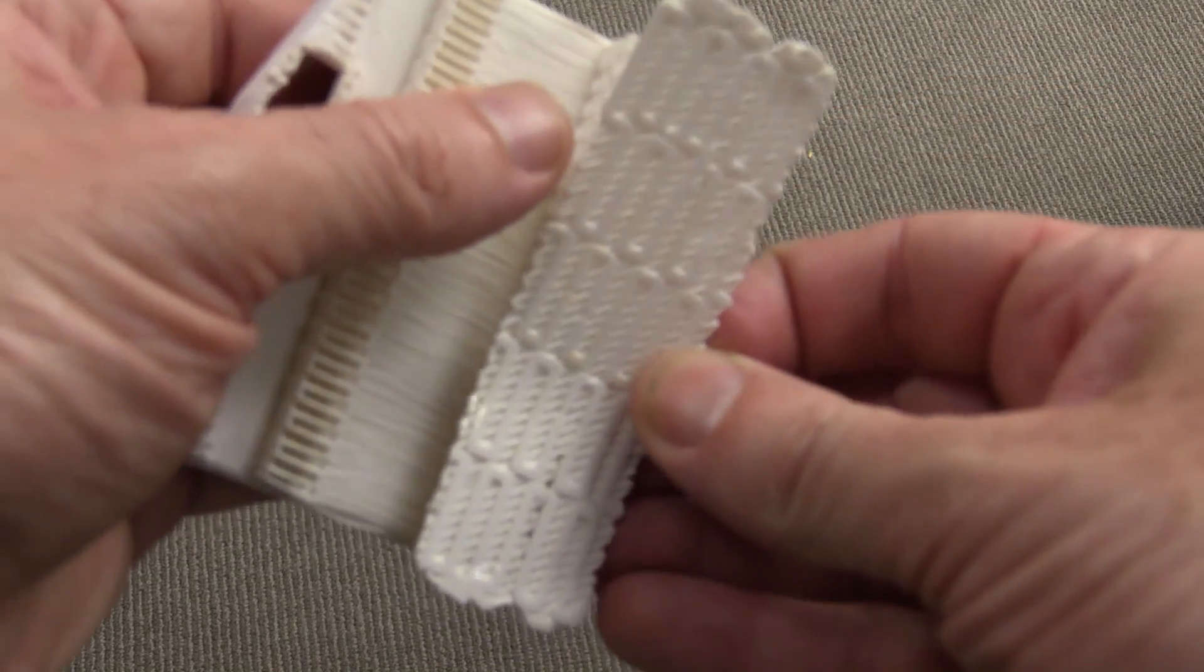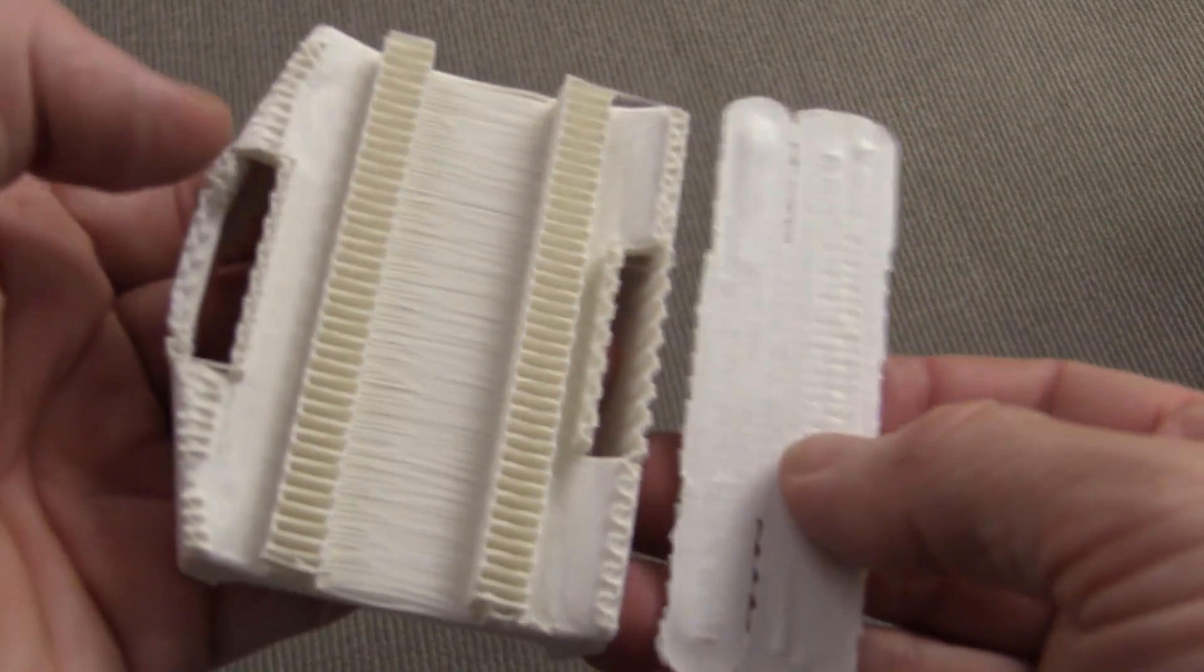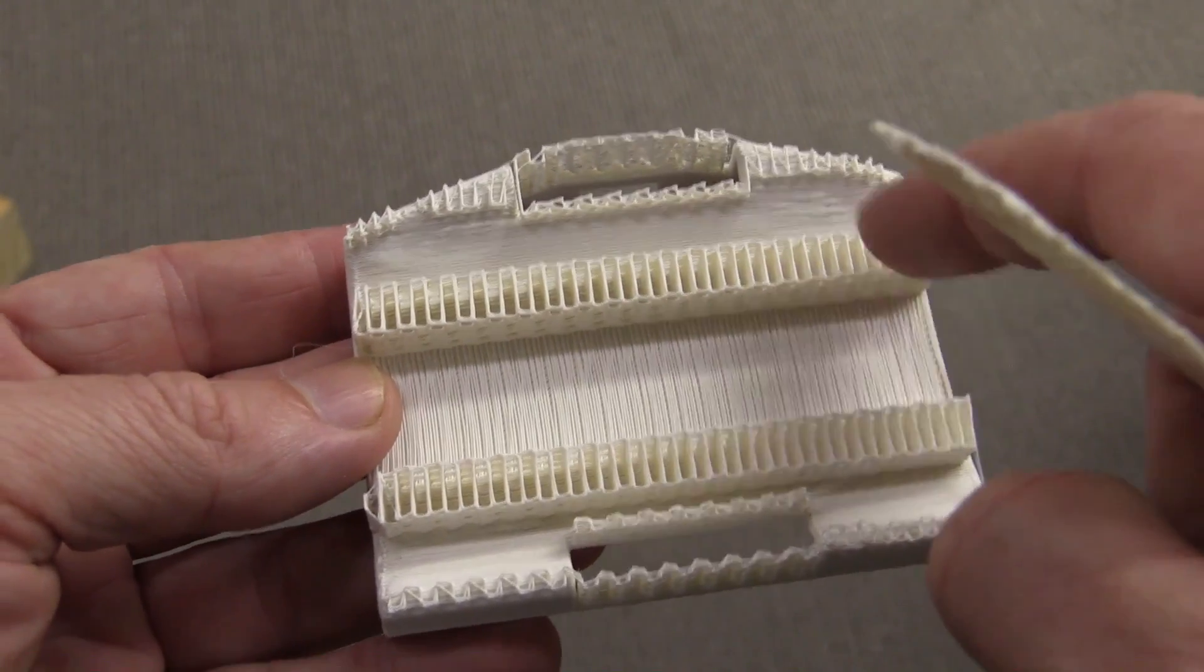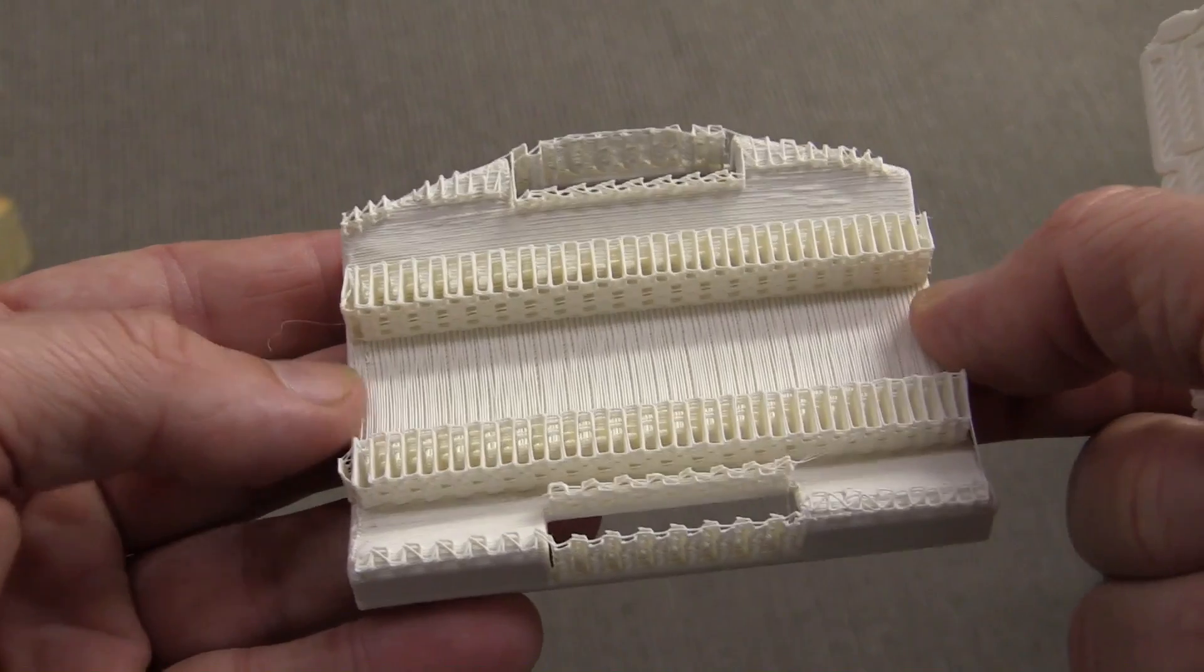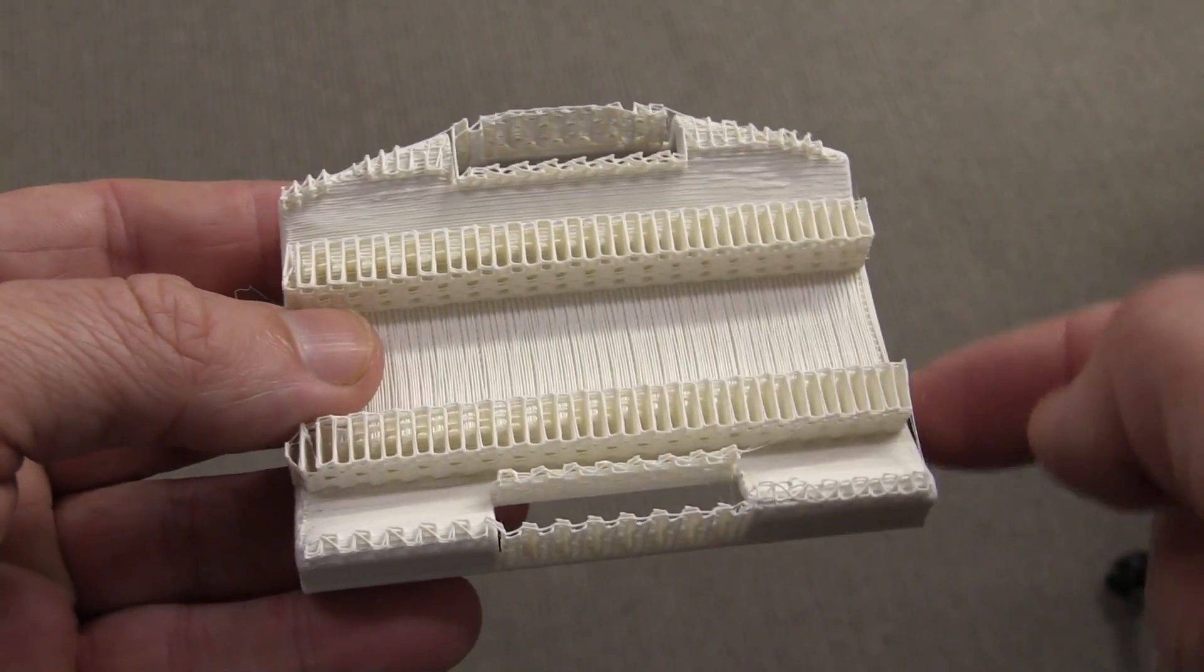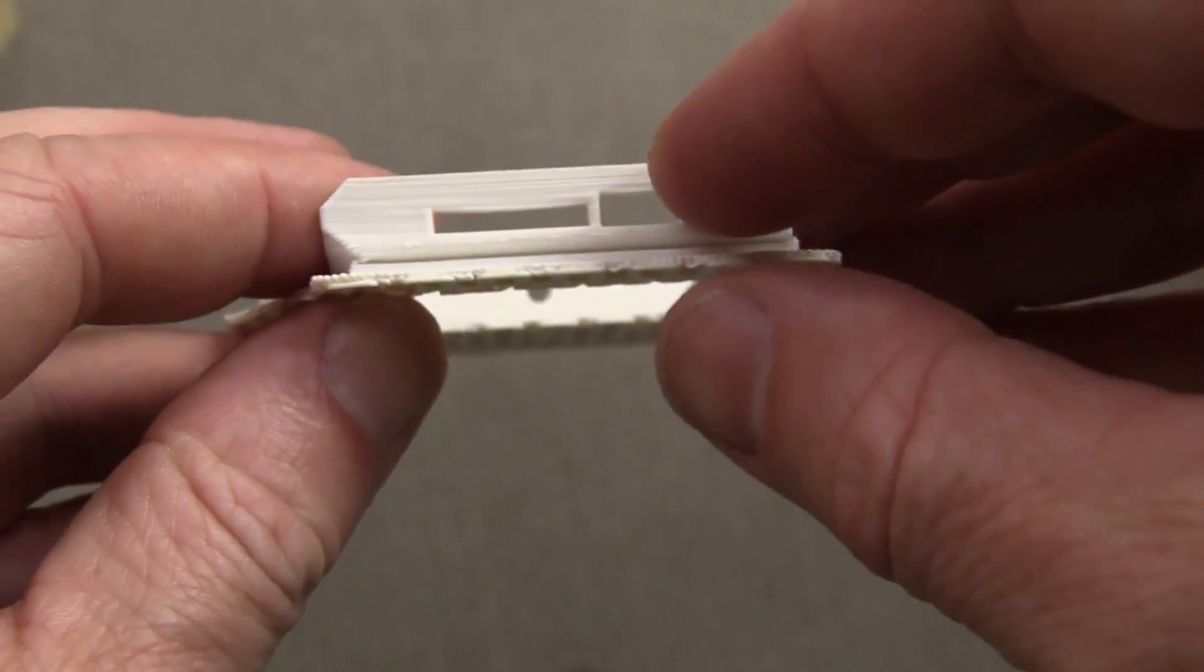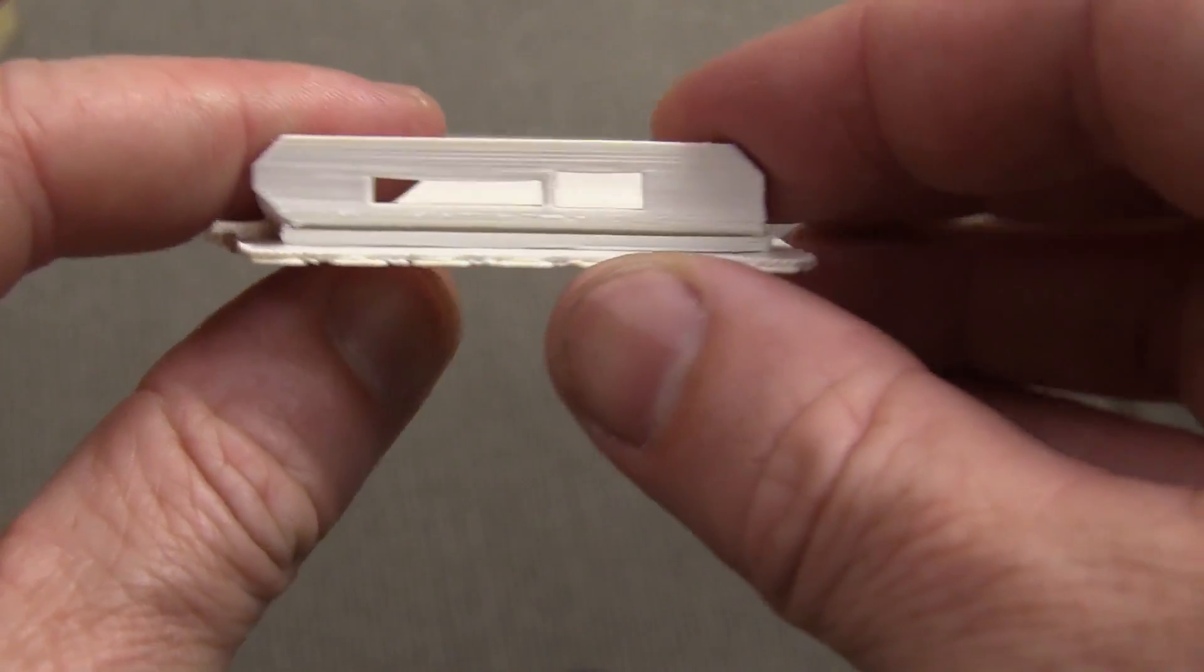These rafts actually peel off quite nicely. Look at that. So that's our support material under there. And you can still see the pattern of the first layer that went down to bridge this huge gap in there. But look at that, there's the slot for the SD card and the USB connector. That turned out really, really nice.